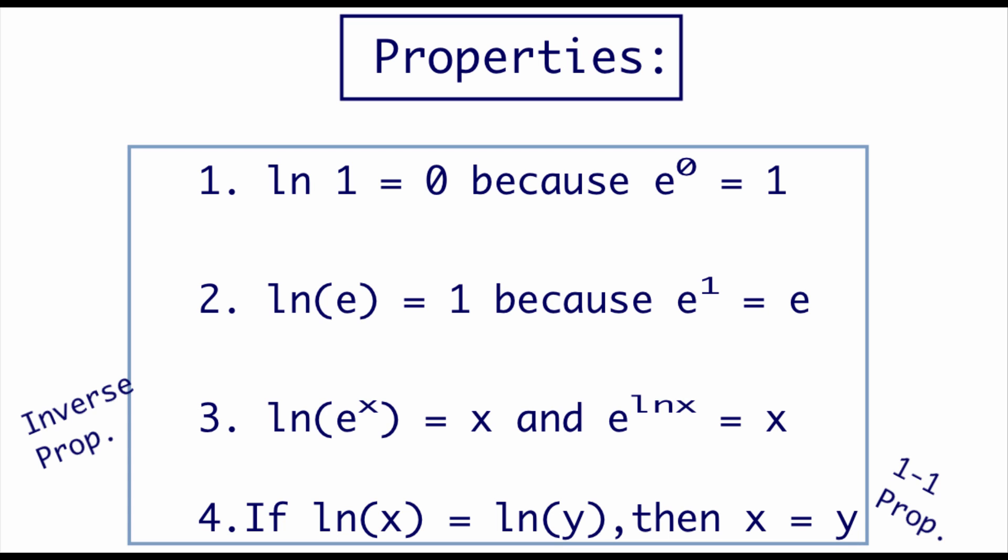In our last video, we talked about properties of general logarithmic functions, but these properties also hold true for natural logs. If we take the natural log of 1, the answer is going to be 0 because if we take that e base and raise it to the 0 power, we're still going to get 1 as an answer. If we take the natural log of just e, we're going to get 1 because if we take that e base and raise it to the first power, the answer is e. That inverse property still holds true. If we do the natural log of e to the x, we're just going to get x as our answer. Or if we take e and raise it to a natural log of x power, we're still just going to get x. Natural logs also have a 1 to 1 property. So if we've got the natural log of x equals the natural log of y, then those x and y things also have to be equal.